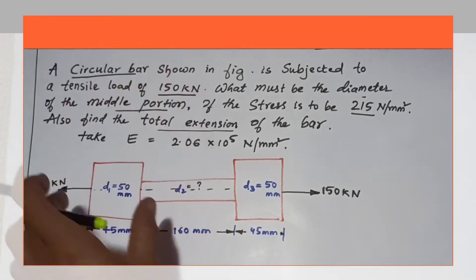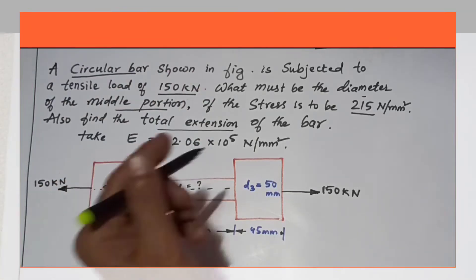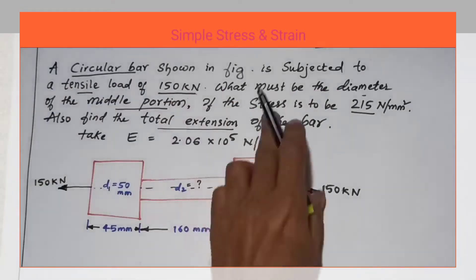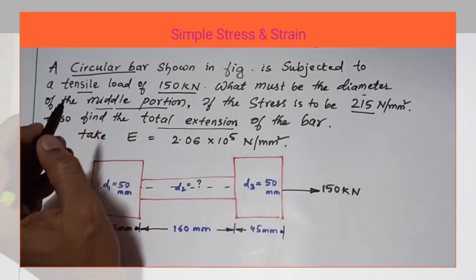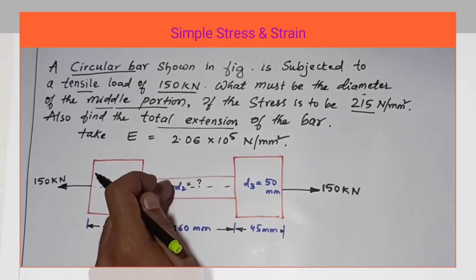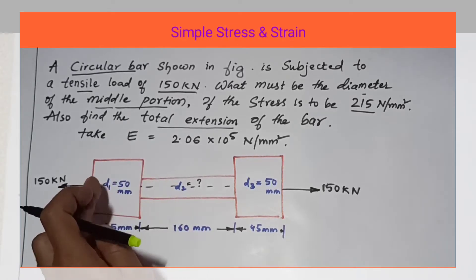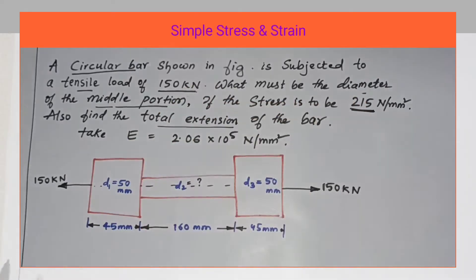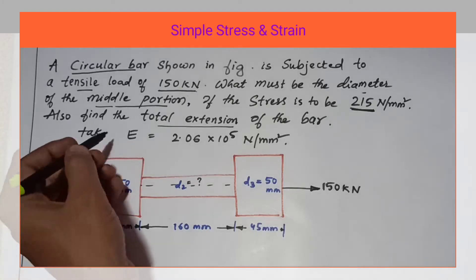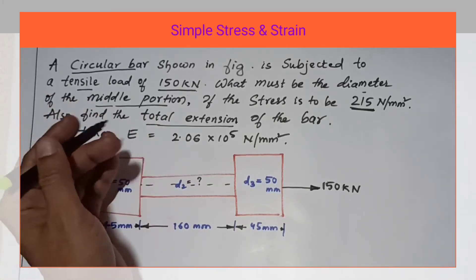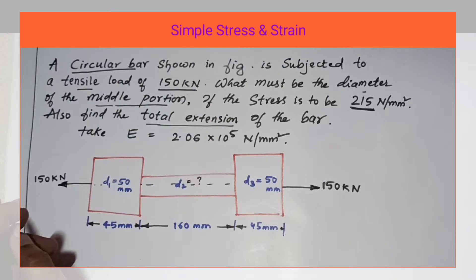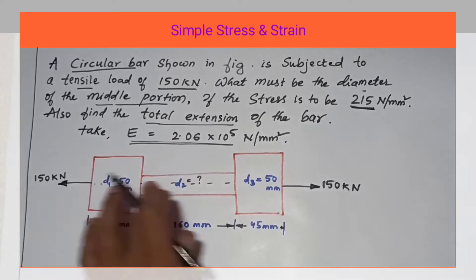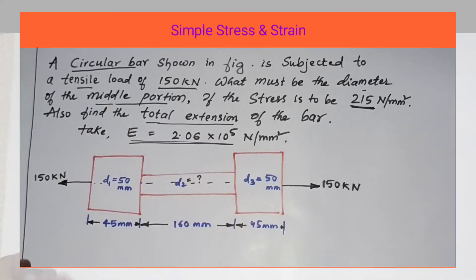So, we have a circular bar as given in the figure, and it is subjected to a tensile load of 150 kilonewtons. We need to find the diameter of the middle portion — D1 and D3 are given, so we need to calculate D2. The stress in the material is given as 250 Newton per millimetre square. We also need to find the total elongation of the bar. Young's modulus of the material is the same for the entire bar — meaning this bar is made of the same material.